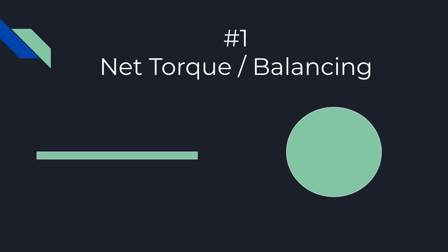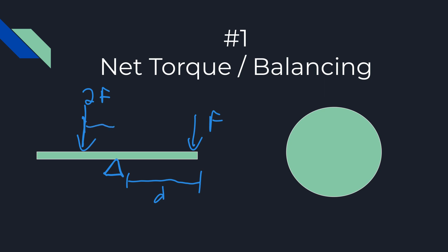One of the things you should definitely expect to see is a net torque or a balancing problem. For example, let's say we have a stick with a fulcrum, and you place a force in one direction. The question asks where you should place a 2F force in order to balance it out. If we place a 2F force on the left and the distance is D, we'd want to push down from a distance of one-half D.